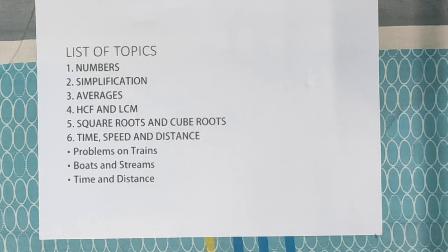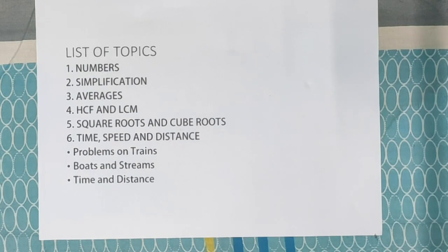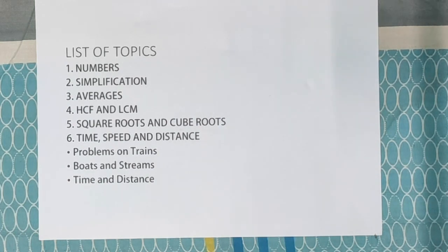Time, speed and distance is the most common basic quantitative aptitude question type. There will be a lot of questions like: a train is moving at 10 km/h speed — what is the time taken to reach a destination 500 km away? There are also boats in streams problems — a boat moving upward in a stream, coming downward, or two boats crossing each other — as well as car speed questions. You can see how easy these are to solve with shortcuts and formulas.